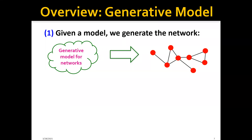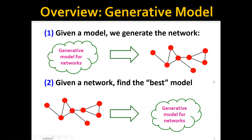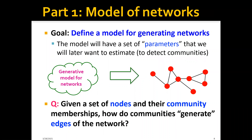Here we use a generative model approach. We'll first design a generative model such that we can generate a network using this model. Then we'll ask the question: given the network, how do we find the best model? And if we find it, we basically also discover the communities. So in the first part, the goal is to define a model for generating networks, and the model will have a set of parameters that we will later want to estimate to detect the community.